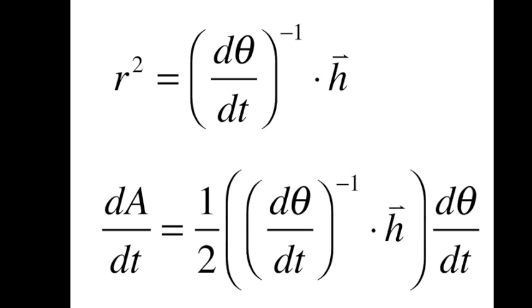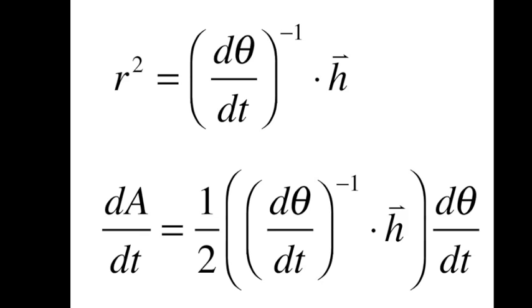If we isolate for r squared in the second term and then substitute that into the first formula, we get the equation shown on the bottom of this screen. After a little cleaning up, we find that the change in area with respect to time is equal to one-half h.